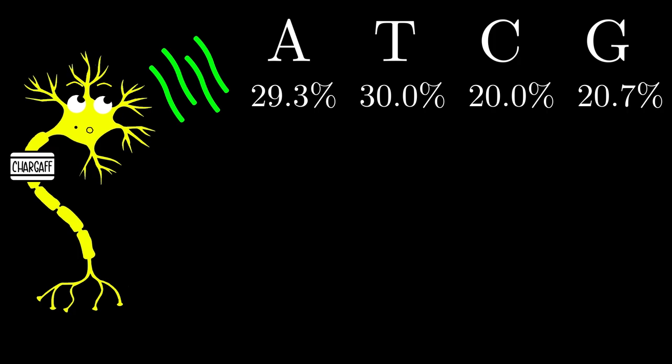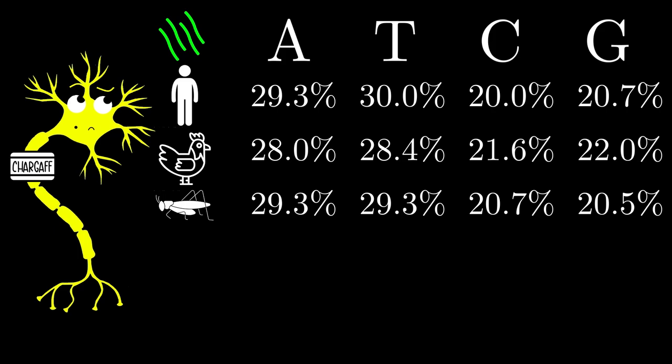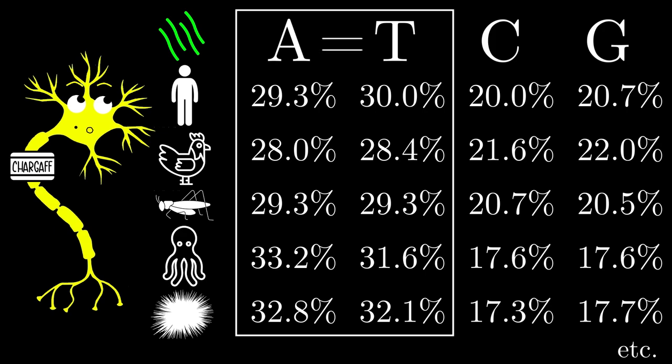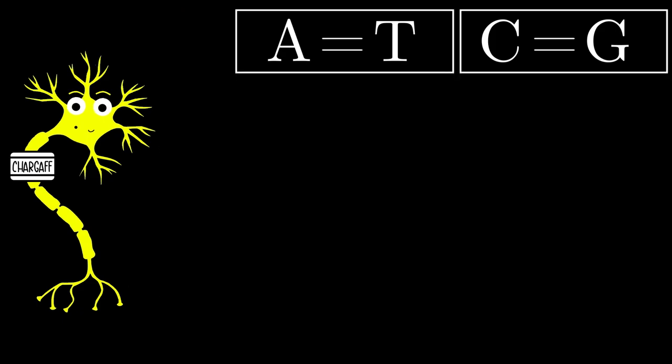So Chargaff realized that Levine's hypothesis was wrong. But Chargaff wanted to be really sure, so he tried it again with chicken DNA. And he got these results. And then he tried grasshopper DNA. And after trying 12 different species, not once did he find equal amounts of A, T, C, and G. Instead, he noticed a different pattern. It seemed that, no matter which species he was looking at, the amount of adenine always equaled thymine, and the amount of cytosine always equaled guanine. And this was a very interesting finding, because this was not what one would expect had Levine's hypothesis been true. So Chargaff published his findings, which eventually became famously known as Chargaff's rules.